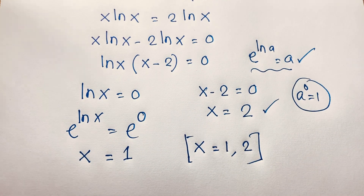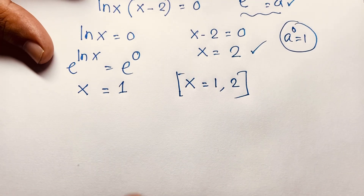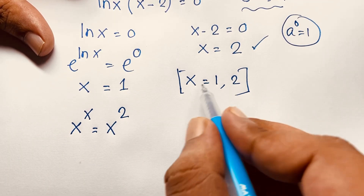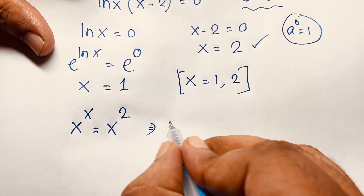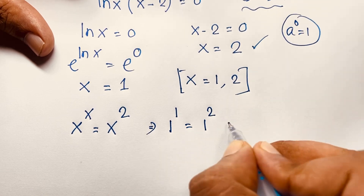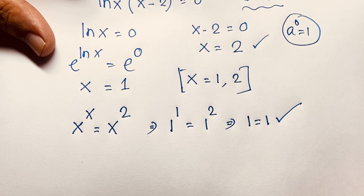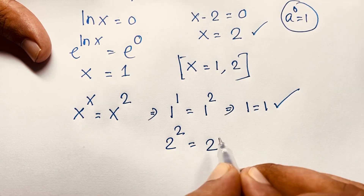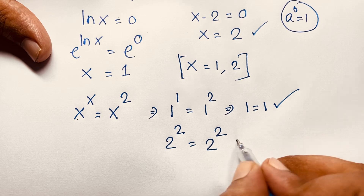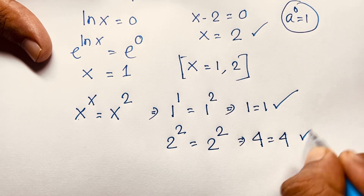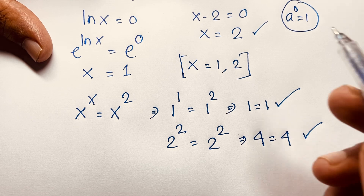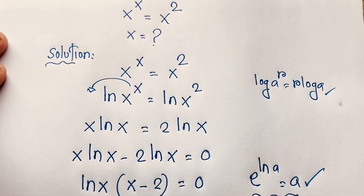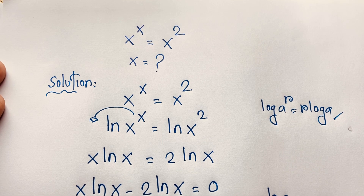So our final answers are x = 1 and x = 2. Let's verify: for x = 1, we get 1^1 = 1^2, which gives 1 = 1 ✓. For x = 2, we get 2^2 = 2^2, which gives 4 = 4 ✓. Both sides are equal, confirming x = 1 and x = 2 is our final answer in this viral exponential math problem. Thank you all — if you enjoyed this video, please subscribe for more interesting videos. Goodbye, take care.